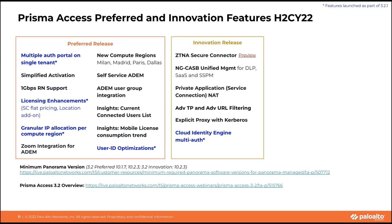As a reminder, for customers adopting 3.2, the preferred Panorama versions are 10.1.7 and 10.2.3. For 3.2.1 innovations, the minimum Panorama version is 10.2.3. Please review the provided link to ensure you're on the correct version. There's also a link on the Prisma Access 3.2 overview webinar for reference.